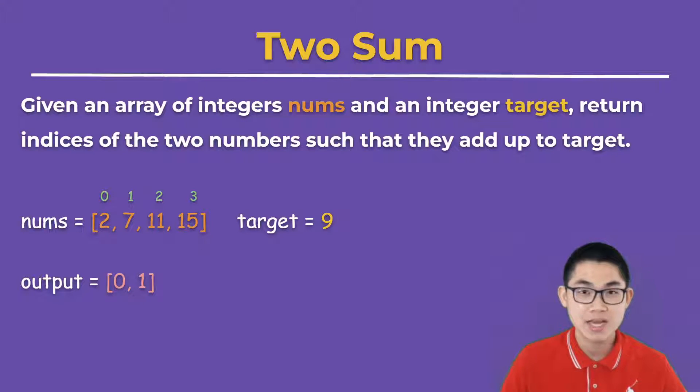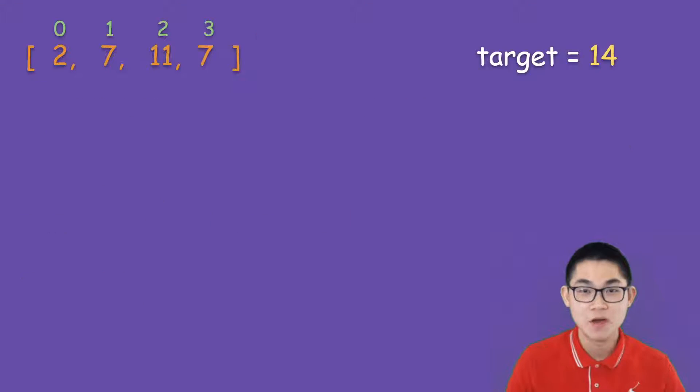So let's go ahead and take a look at how to solve this problem. For example, we have the array 2, 7, 11, and 7. And here are their indices. And we want the target of 14. The first step is to create a dictionary. And you'll see why we need this. This will make our program run very fast.